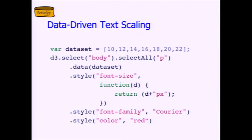The first example we looked at last time was this data-driven text scaling where we had a data set of seven elements. Watch the syntax: D3.select. Remember, select selects the first match and we look for the body of the HTML, which there's typically only one of. Through method chaining, that gives us a set of objects of size one — the DOM subtree with the body. Then we say select all on that to get the paragraphs out of it, giving us a set of P elements. Then we do a .data to join it to a data set, so we'll have an association between these seven elements in the data set and P's in our DOM.